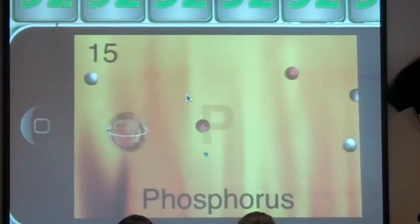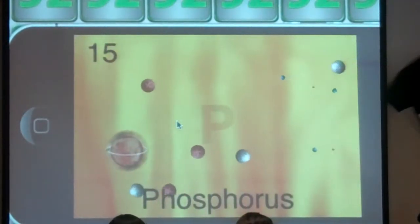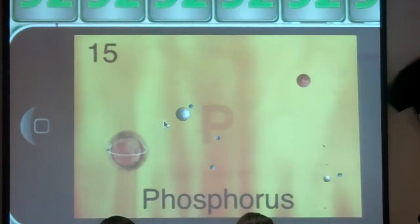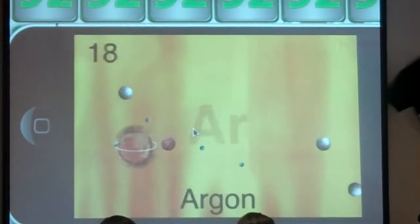As he hits some of the elements, it detracts from his atomic weights. So the goal is to get to element 92. And when you're able to do that, you're able to finish the game.